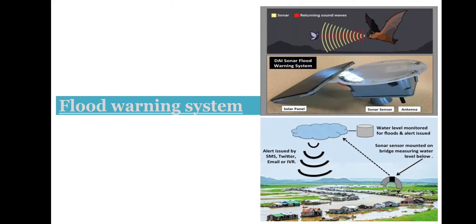For the flood warning system, IoT sensors are mounted on bridges or at the bank of rivers to measure the water level below. The sensor makes use of the same principle that bats use to see. The sensor mounted on a bridge sends high-frequency sound onto the water and measures the time it takes for the echo to reflect back. As the water level rises, the return time for the echo shrinks as there is a shorter distance to cover — this is the IoT sensor flood warning system.